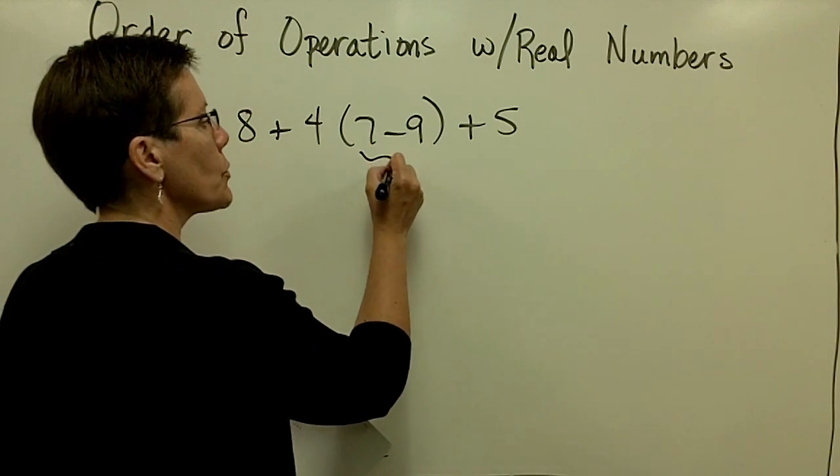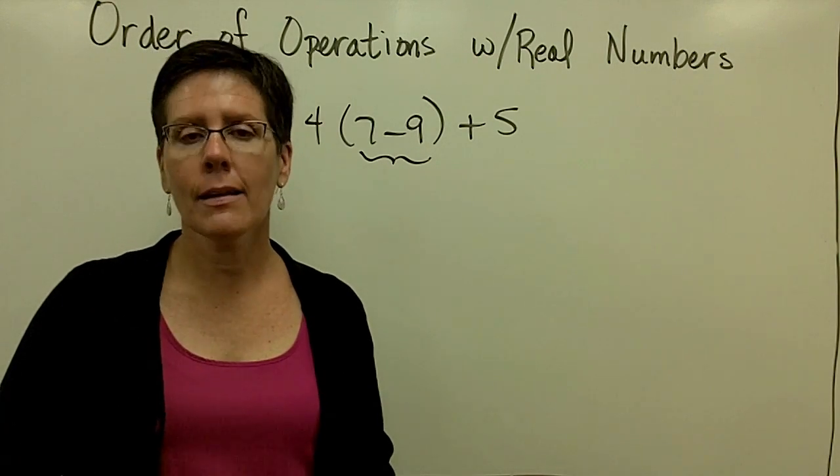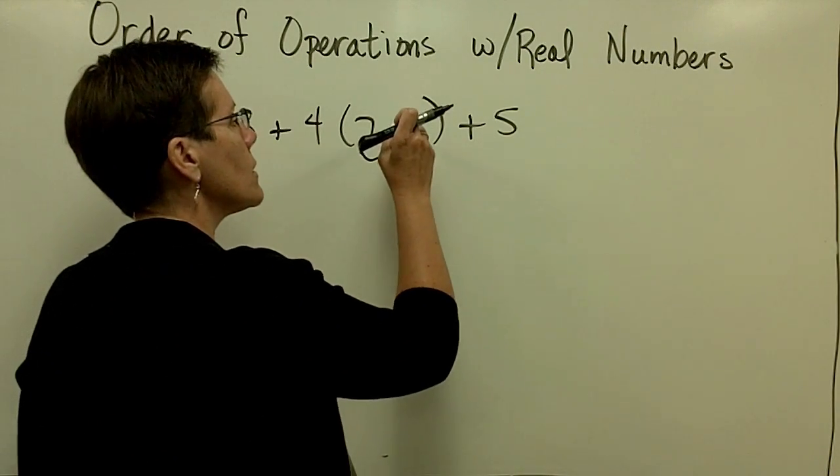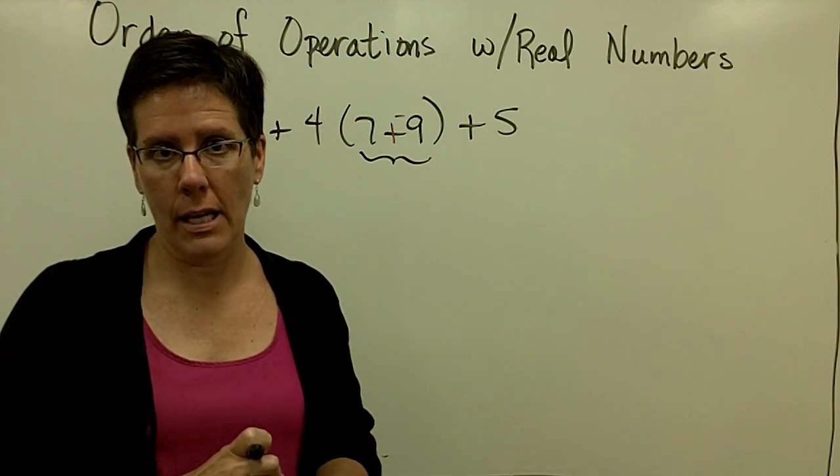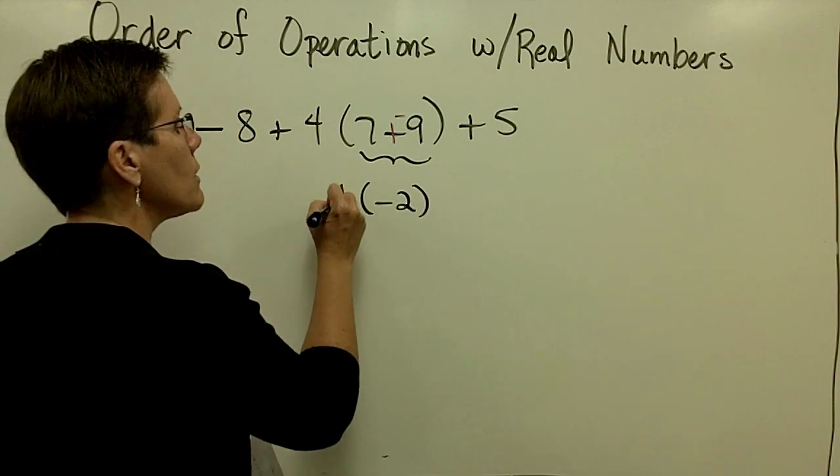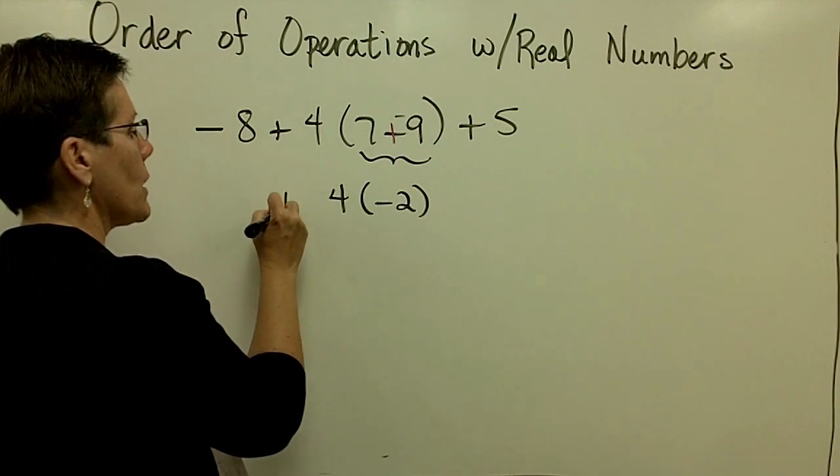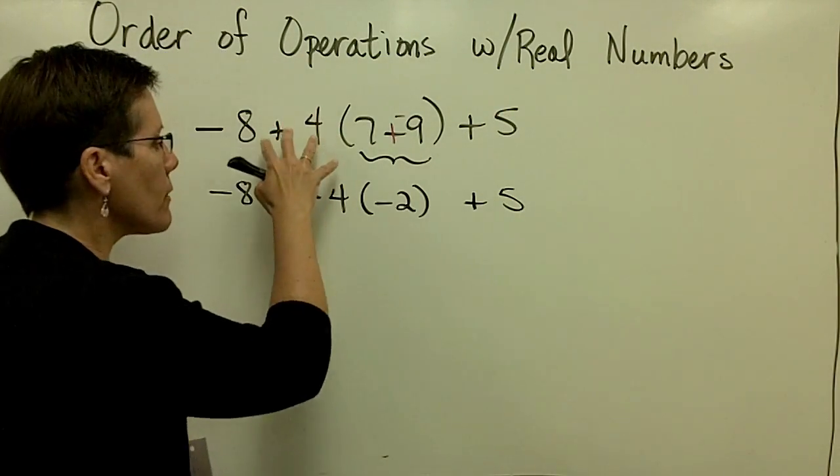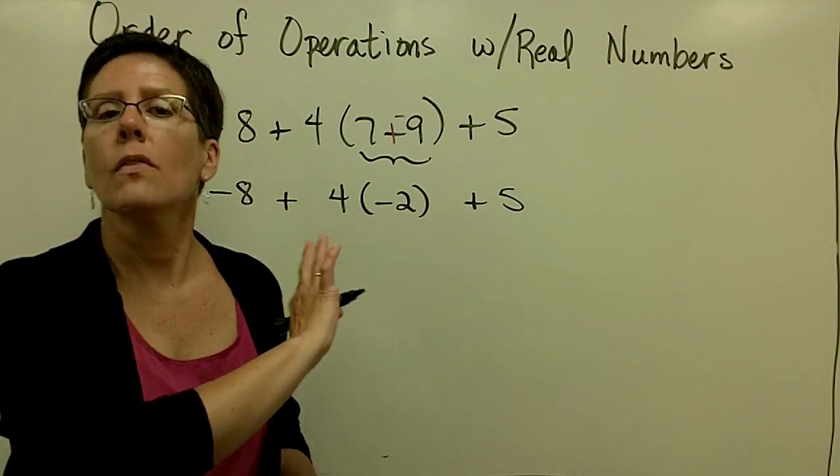Order of operations says I should do what's in the parentheses first here. And when I take 7 and subtract 9, I get a negative 2. I'm hoping you can do that in your head, but if you need to write 7 plus a negative 9 is a negative 2, that would be fine. Because that's a signed number, keep that in parentheses, because in front of that, I have 4 times whatever that is. And bring everything down. Order of operations says after you've done the parentheses, you do the exponents. There are none.